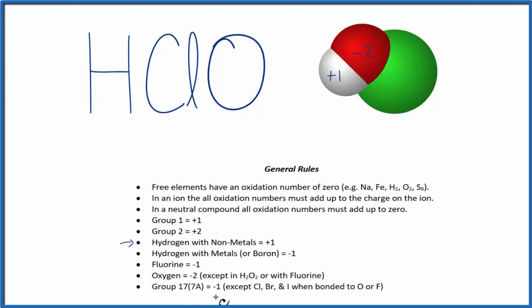Chlorine's in group 17, and normally it will have a minus one charge, but when it's bonded to oxygen, we can't use this rule. So we're going to have to figure the chlorine out using this information, and the rule,